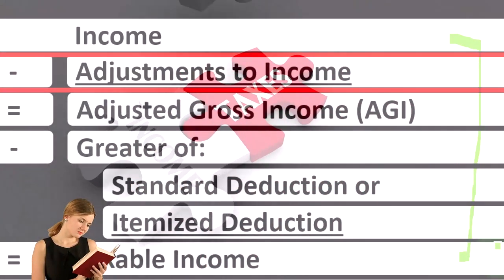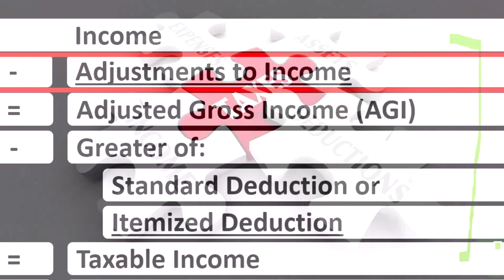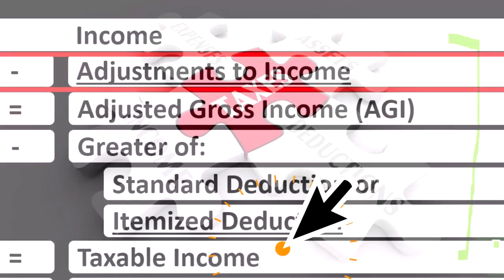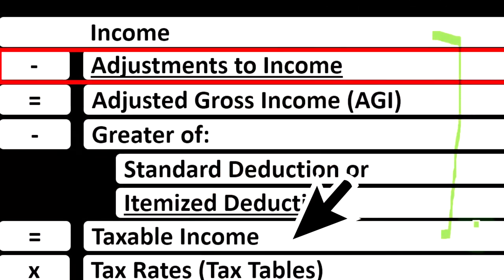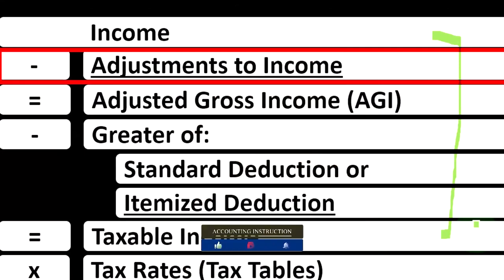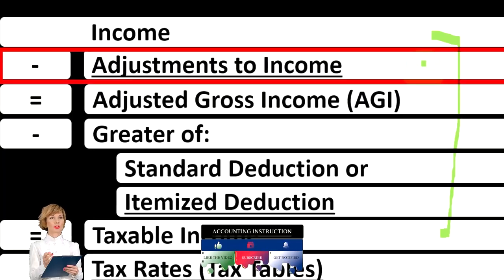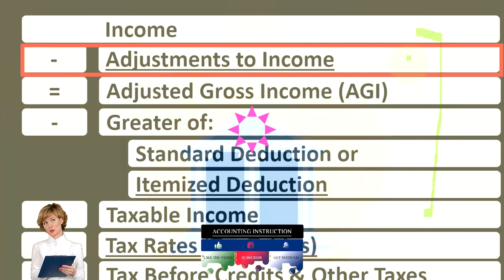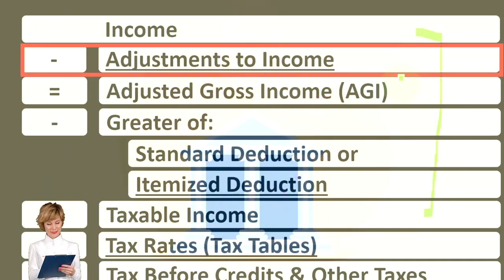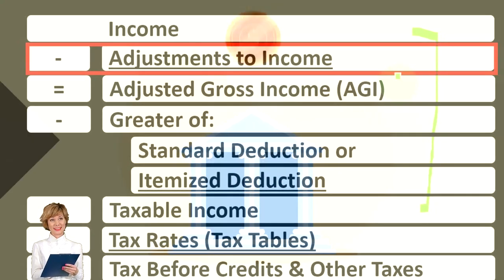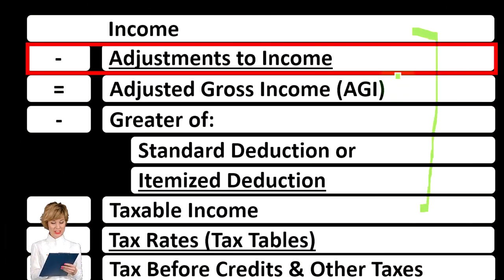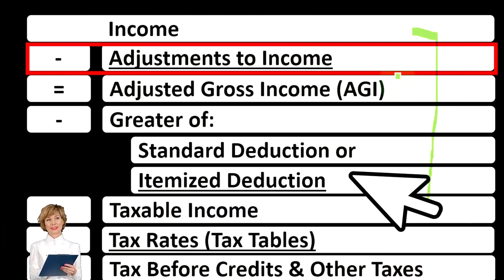Everything's upside down — topsy-turvy — where we want the taxable income to be as low as possible, as opposed to normally when we want the net income to be as high as possible. The adjustment to income can be thought of as a deduction or as a contra income account, because it's decreasing the income line to get down to the subtotal of adjusted gross income — an important subtotal because that's the one generally used to phase out things as income levels go up, like deductions and credits.